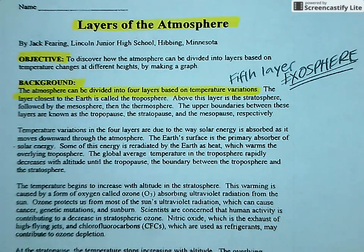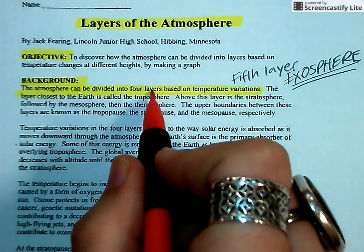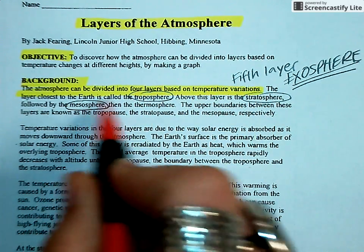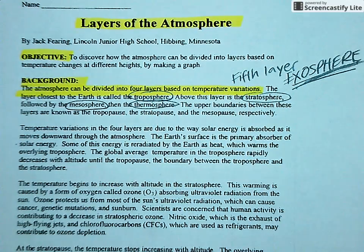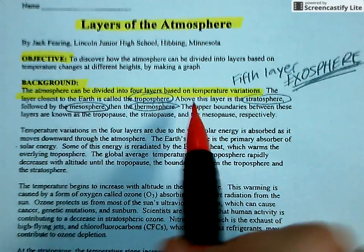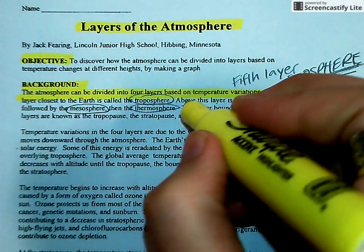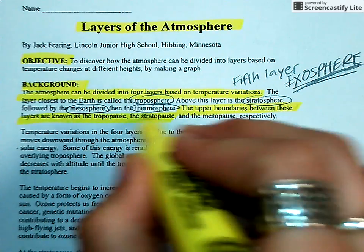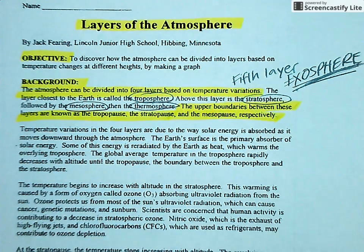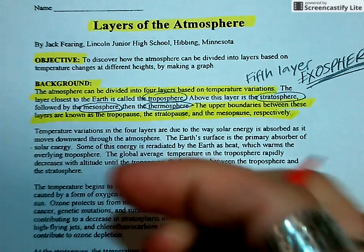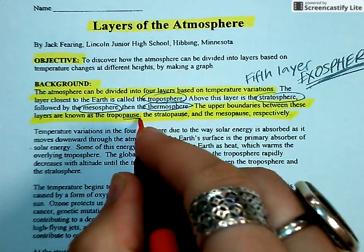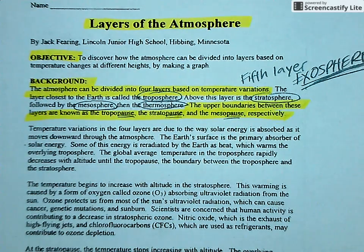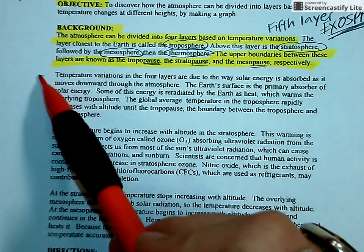All right, so we should know that the closest layer is the troposphere. And above that is the stratosphere followed by the mesosphere and the thermosphere. And then the last one, like I said, the exosphere. And then it said the upper, so this is important. So it says the upper boundaries between these layers are known as the tropopause, stratopause, and mesopause. The reason why it's called, has that pause is because this trend of warming and cooling pauses.